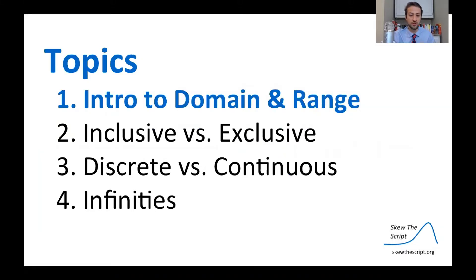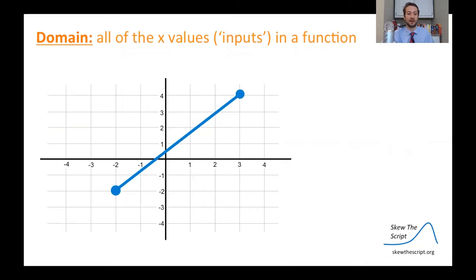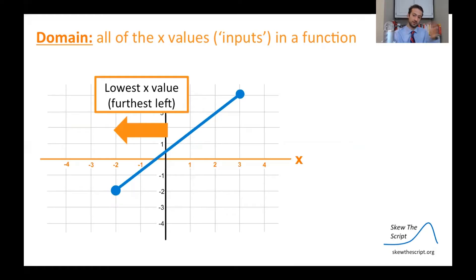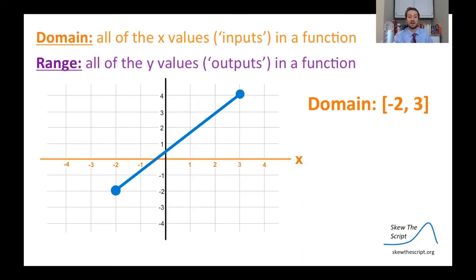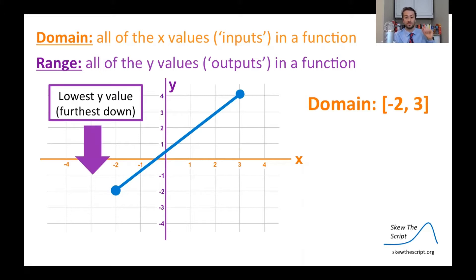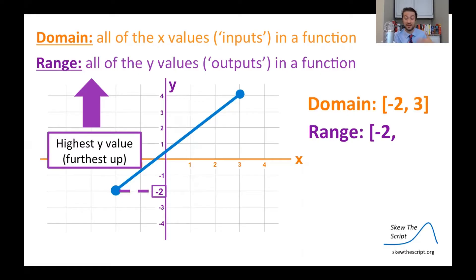We're going to start with our introduction to domain and range. We have a chart here, and our domain is all the x-values, or inputs, in a function. The orange line shows the x-axis. The minimum part of the domain is the lowest x-value — the value furthest to the left — in this case that's negative two. The highest x-value is the other part of the domain, furthest to the right, which in this case is three. The range is all the y-values, or outputs. The y-axis is drawn in purple. The first part of the range is the lowest y-value, furthest down, which is negative two, and the highest y-value — the value furthest up — is four.